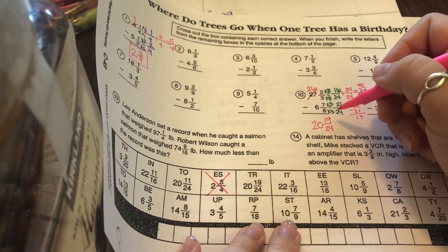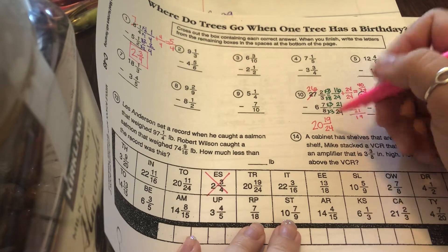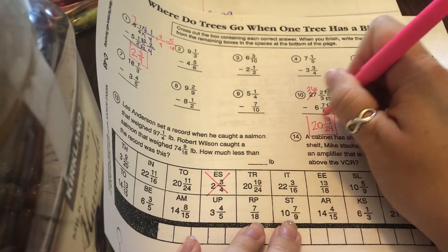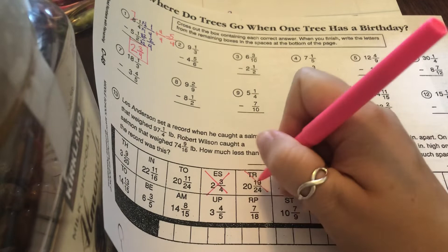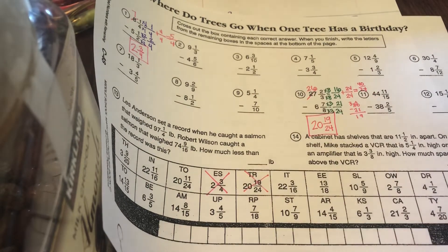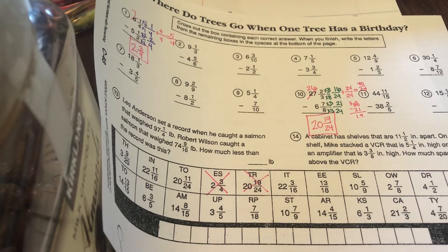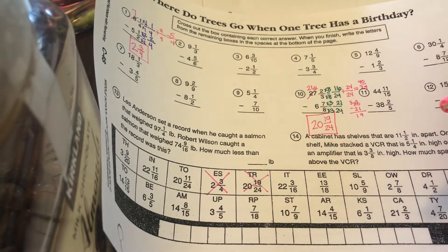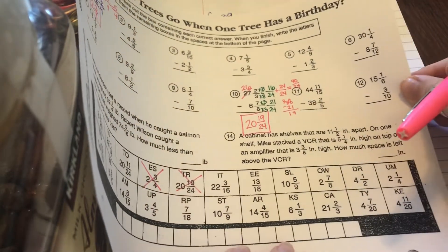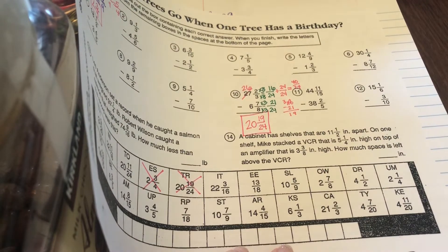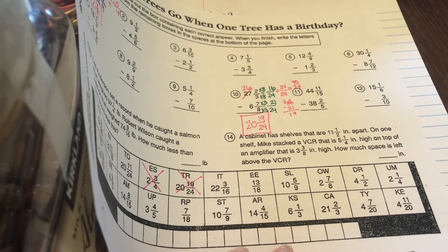You can't reduce that, and it's not improper, so we're done. 20 and 19 24ths. Let's go ahead and cross that off. And then let's also take a look at number 14 just to get you started. You're welcome to hit pause on the video and try it yourself to see if you got it right, and then press play again to follow along.